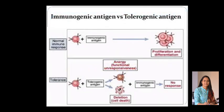Let us compare immunogenic antigen versus tolerogenic antigen. In normal immune responses, the immunogenic antigen comes in contact with the lymphocyte, and then that lymphocyte proliferates and differentiates normally. But in the case of tolerance, whenever a tolerogenic antigen comes in contact with the lymphocyte, it can either result in anergy — that is, functional unresponsiveness — or death of the cell exposed to the tolerogenic antigen. So when these cells subsequently come in contact with an immunogenic antigen, they give no response; they are basically tolerized.